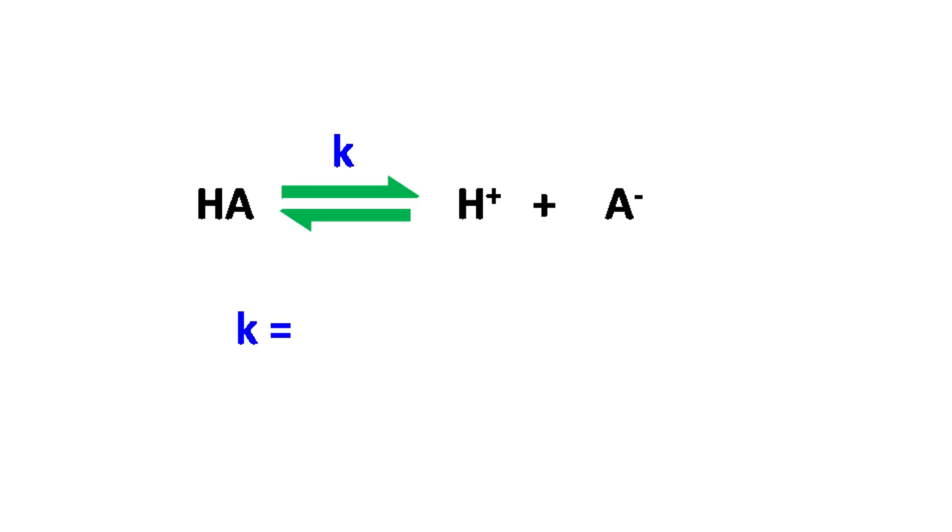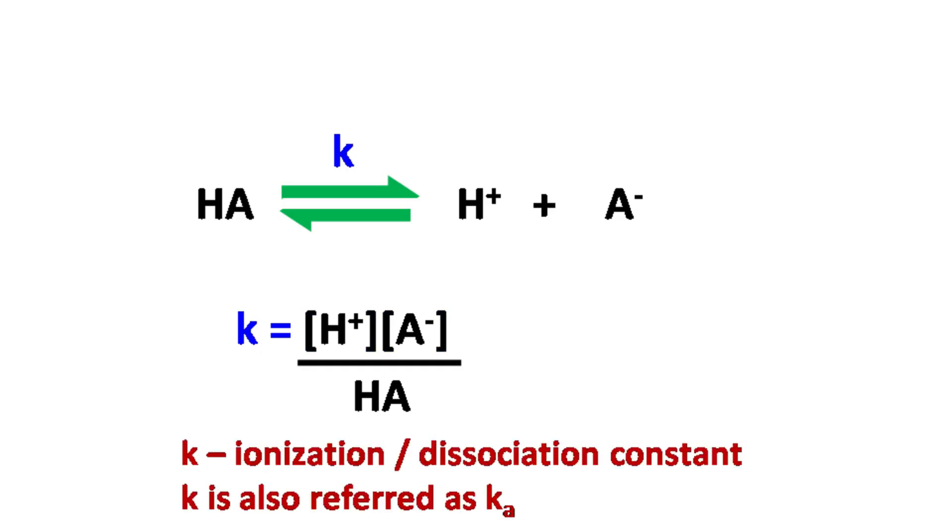This equilibrium constant K can be written as the product of H+ A- to the concentration of HA. The equilibrium constant for such ionization reaction is also known as ionization constant or dissociation constant denoted by Ka.